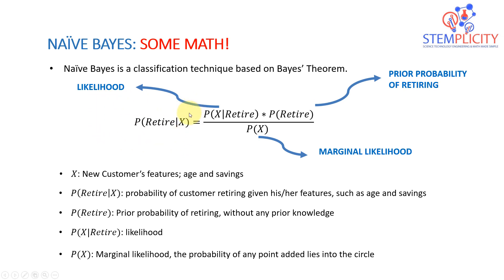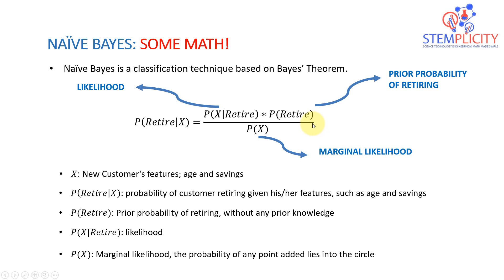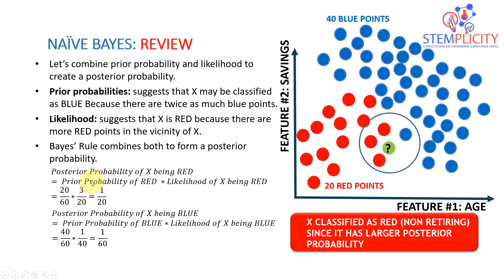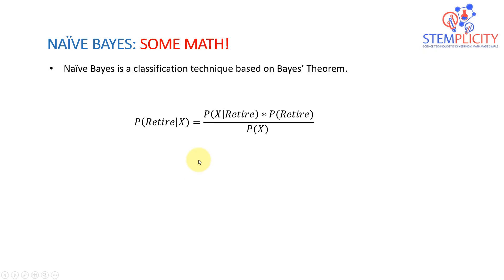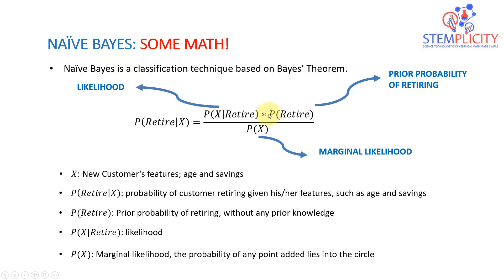The equation says: the posterior probability equals the likelihood multiplied by the prior probability, divided by what we call the marginal likelihood. This equation is essentially the same as before, but without normalization — when you sum up the two probabilities, they don't sum to one. So we divide by the marginal likelihood P(X) to adjust the equation so the probability ranges from 0 to 1.